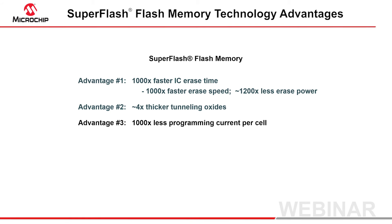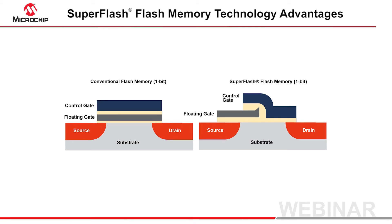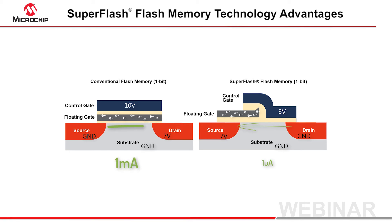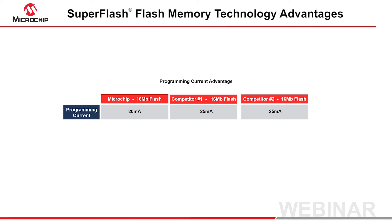Super Flash advantage number three is lower programming current. With the direct management of the gate channel using the split gate control, the efficiency of the hot electron programming current is improved. A 1 microamp channel current in Super Flash creates the same needed trap charge in about the same time as a 1 milliamp current creates in conventional flash — that is one thousand times lower current per cell. This improves the general health of the silicon because there are much smaller currents moving through the supply traces, the layer-to-layer contacts, and so on.